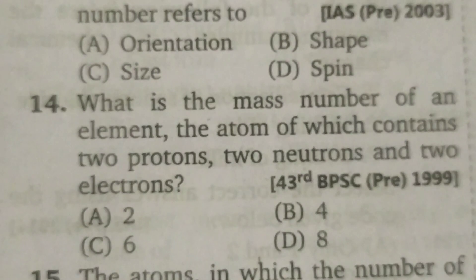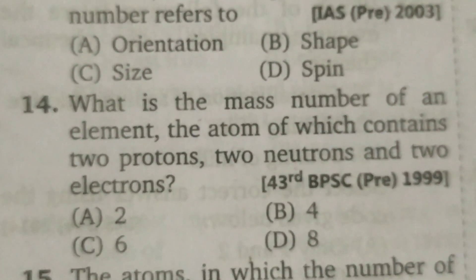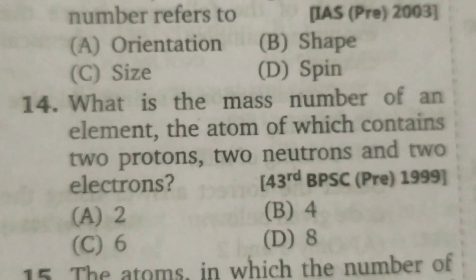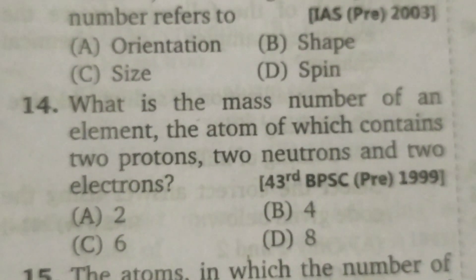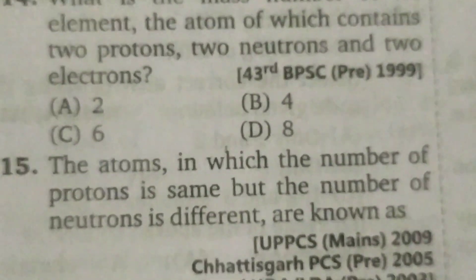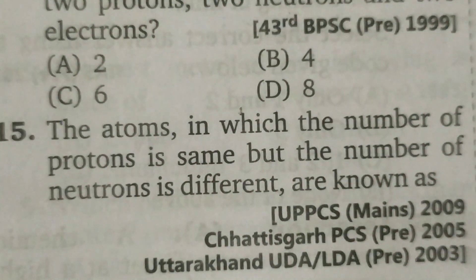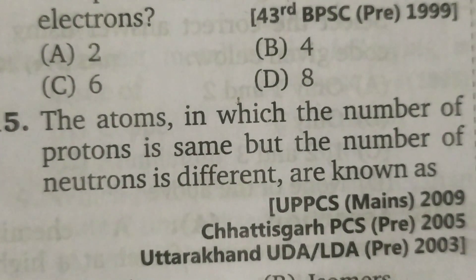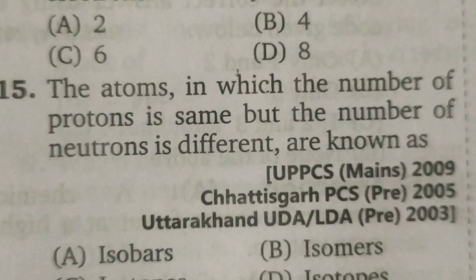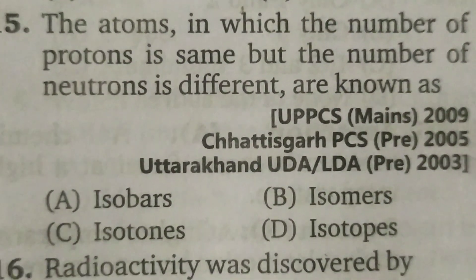What is the mass number of an element whose atom contains two protons, two neutrons and two electrons? Four. The atoms in which the number of protons is the same but the number of neutrons is different are known as isotopes.